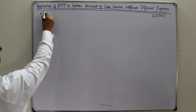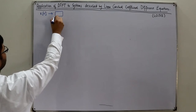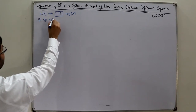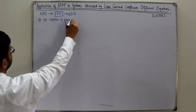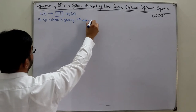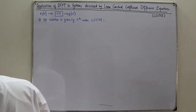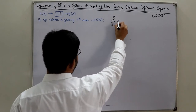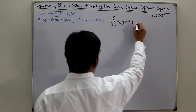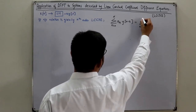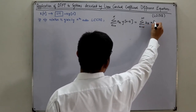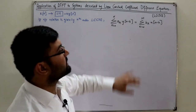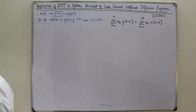The input-output relation is given by an Nth order linear constant coefficient difference equation: summation k from 0 to N of a_k times y(n-k) equals summation k from 0 to M of b_k times x(n-k). Here x is the input, y is the output, and a_k and b_k are the weights or constants.